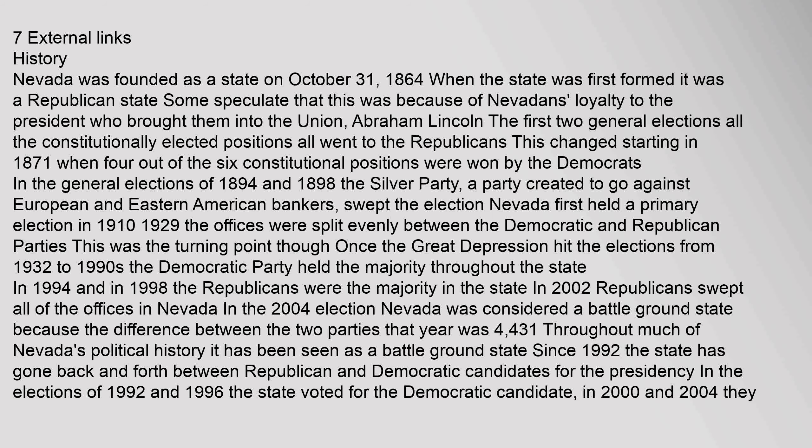History: Nevada was founded as a state on October 31, 1864. When the state was first formed it was a Republican state. Some speculate this was because of Nevadans' loyalty to the president who brought them into the Union, Abraham Lincoln. The first two general elections saw all constitutionally elected positions go to the Republicans. This changed starting in 1871 when four out of the six constitutional positions were won by the Democrats.